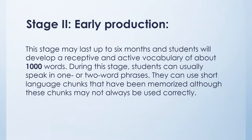Stage two is called early production, and this stage may last up to six months. Students will develop a receptive and active vocabulary — the active or expressive vocabulary being the words the student is able to speak. During this stage, students can usually speak in one or two word phrases and use short language chunks that have been memorized, although these chunks may not always be used correctly. The stage doesn't have to last the full six months.